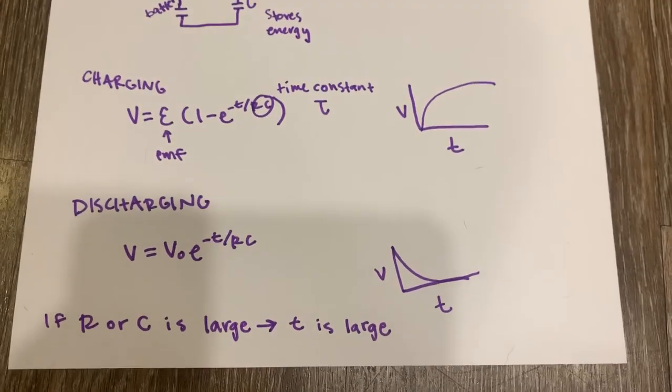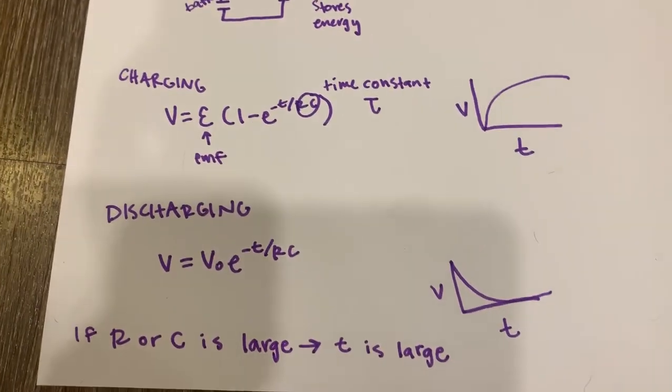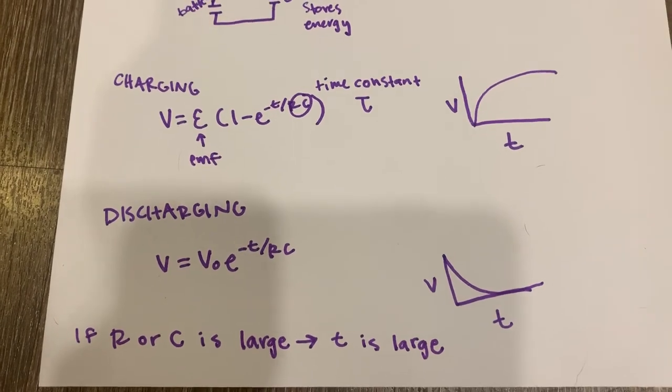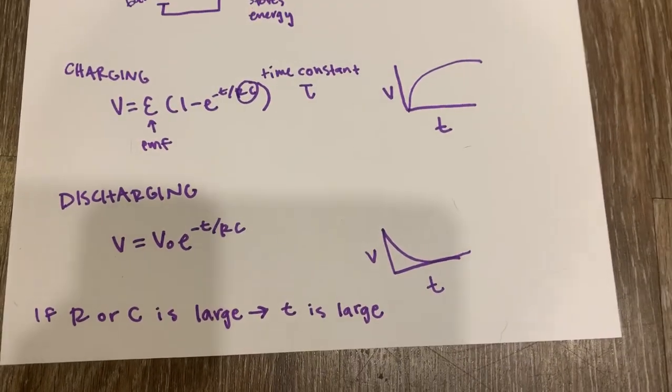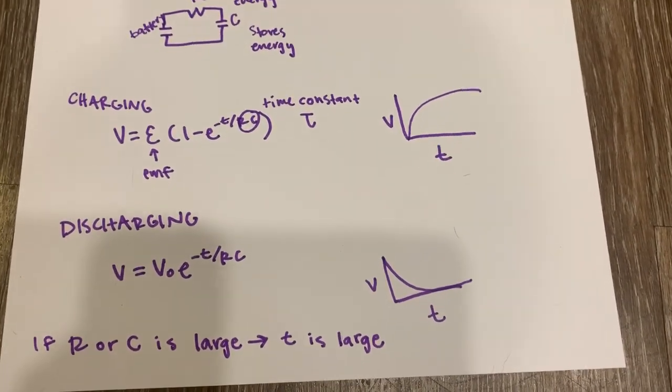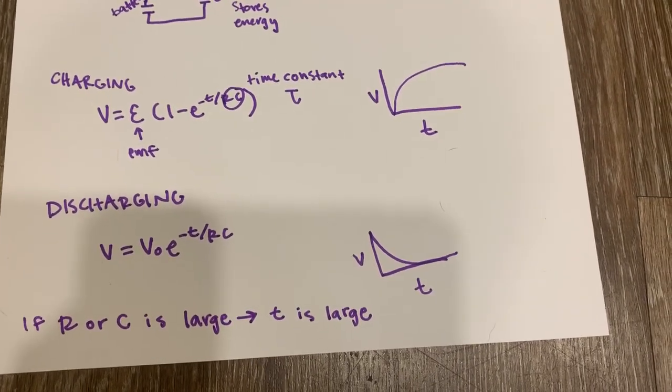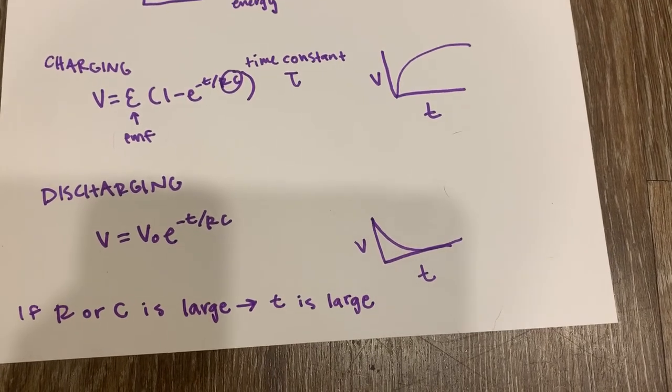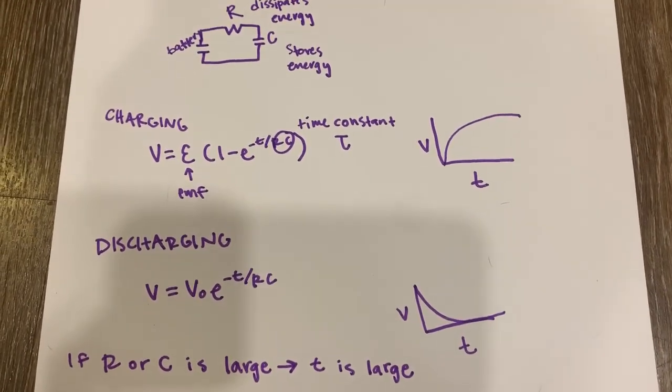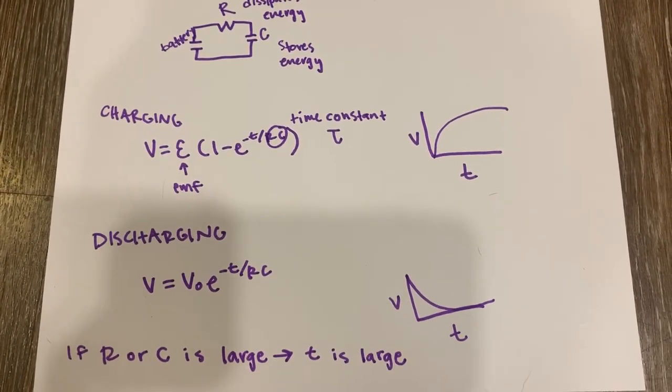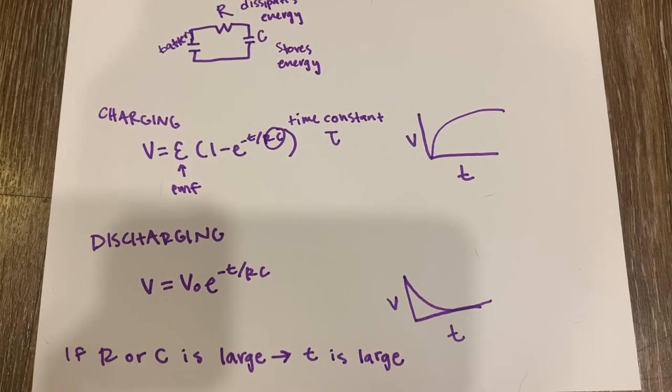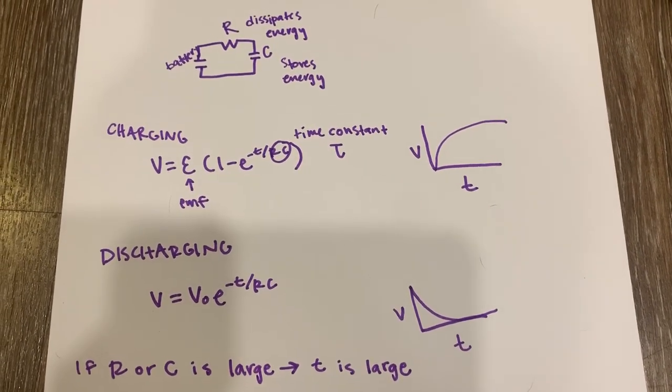So some common uses of charging and discharging capacitors. Well, specifically discharging in this case, you can think about a defibrillator. It discharges energy stored in the capacitor to shock the heart and to get it to begin beating again. Also, the flash on the camera discharges energy stored quickly to take a precise photo.